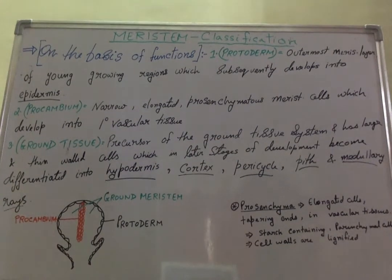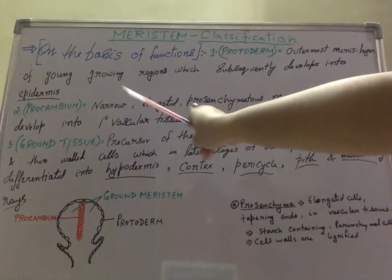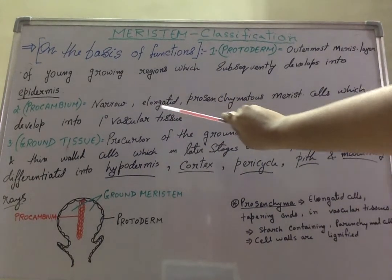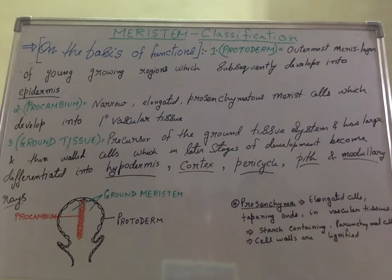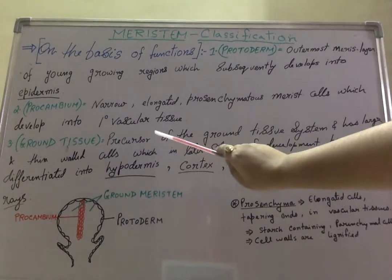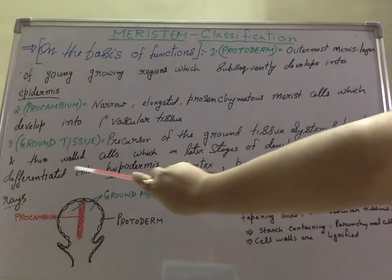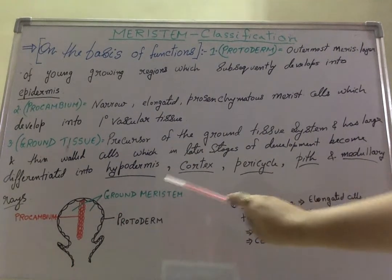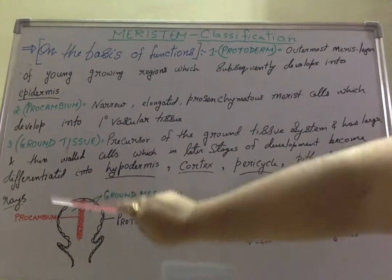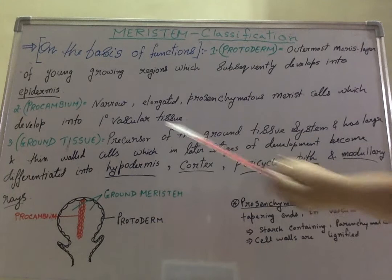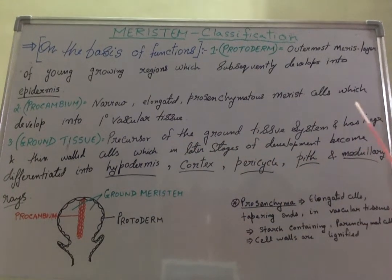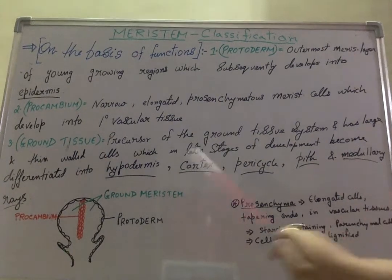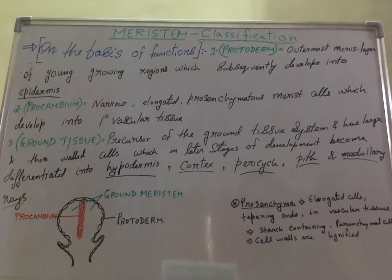Prokambium is the precursor for primary vascular tissue, consisting of narrow, elongated, prosenchymatous meristematic cells. The third and last point is ground meristem, the precursor of the ground tissue system. It has large and thin-walled cells which in later stages of development become differentiated into hypodermis, cortex, pericycle, pith, and medullary rays.